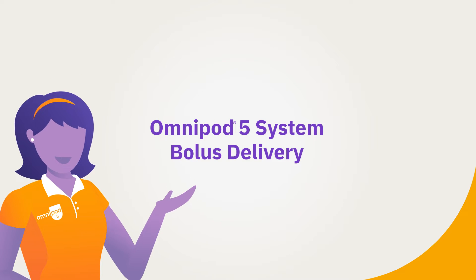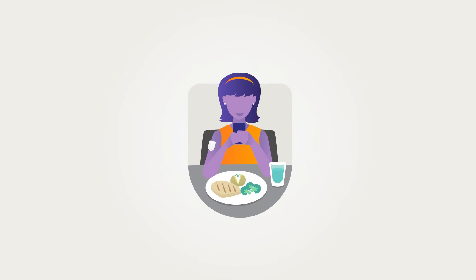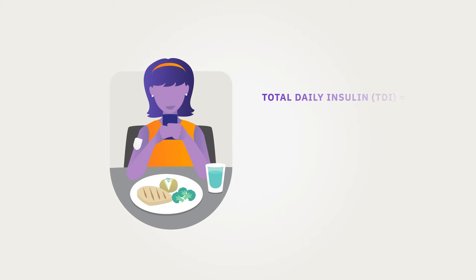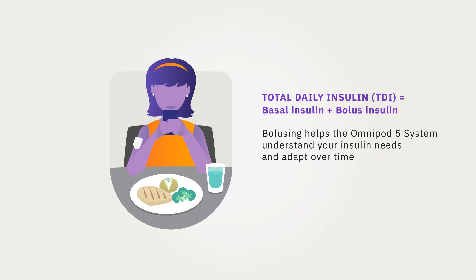Omnipod 5 System Bolus Delivery. With all automated insulin delivery systems, bolusing is required. With Omnipod 5, the system tracks your total daily insulin, which includes basal and bolus insulin. The system updates this total daily insulin with each pod change to match your insulin needs. This is why bolusing for meals, snacks, and high glucose levels is important — it helps the system understand how much insulin you need and adapt over time.